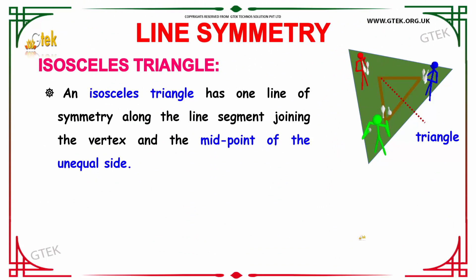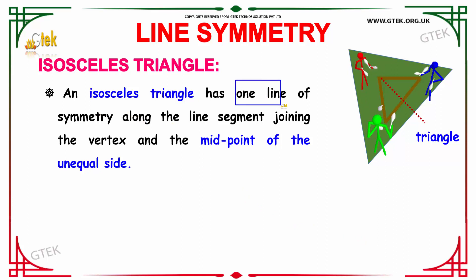Next, we are going to see about the isosceles triangle. An isosceles triangle has one line of symmetry along the line segment joining the vertex and the midpoint of the unequal side. As you can see, the line of symmetry is along this axis.